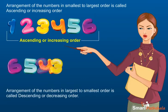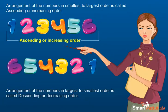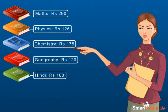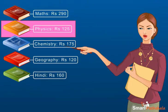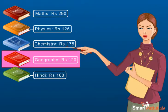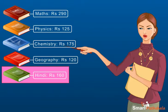Arrangement of the numbers in largest to smallest order is called descending or decreasing order. Suppose the costs of 5 books are shown here. Maths – 290 rupees, Physics – 125 rupees, Chemistry – 175 rupees, Geography – 120 rupees, Hindi – 160 rupees.